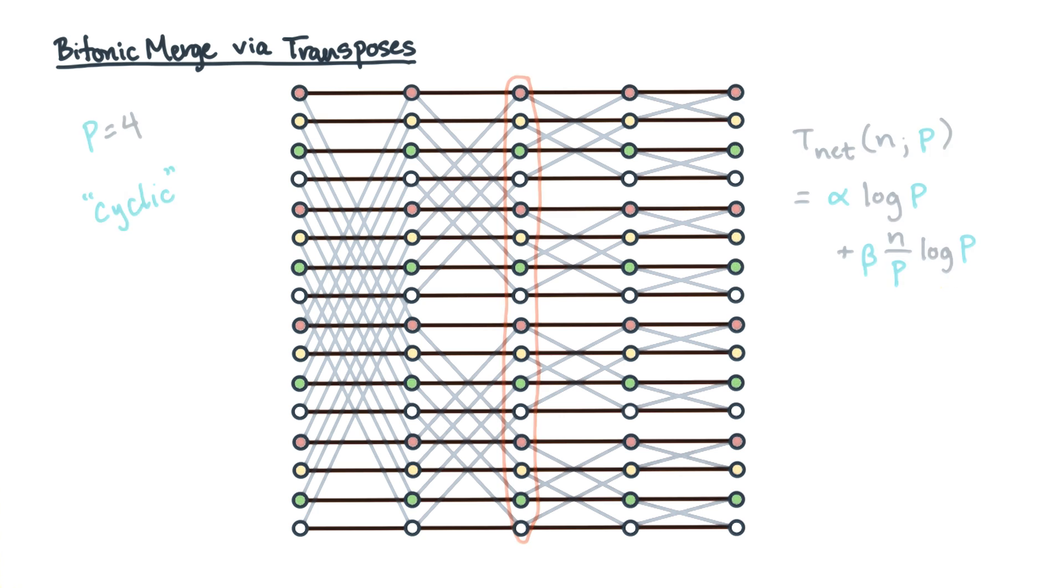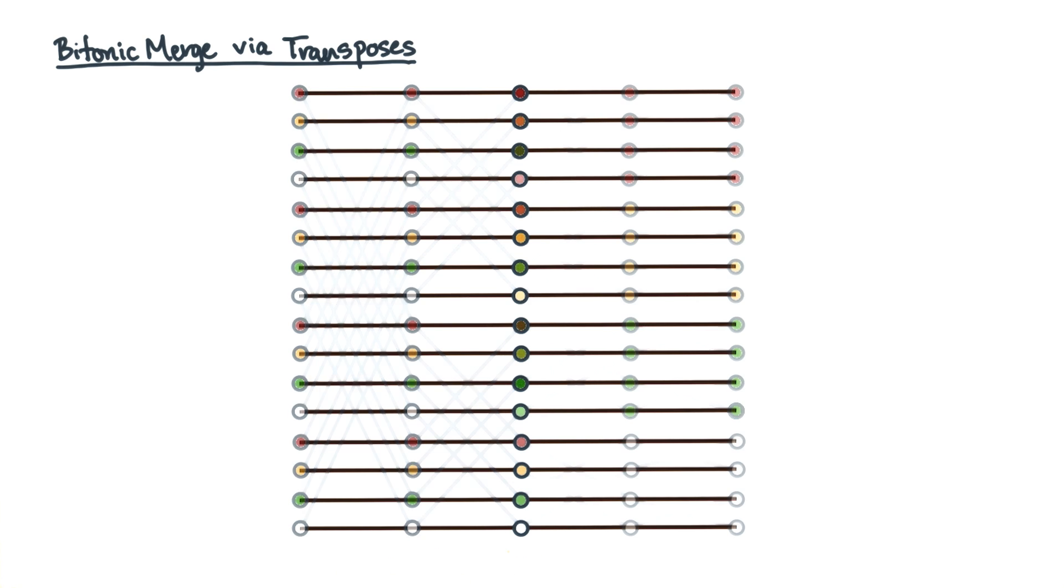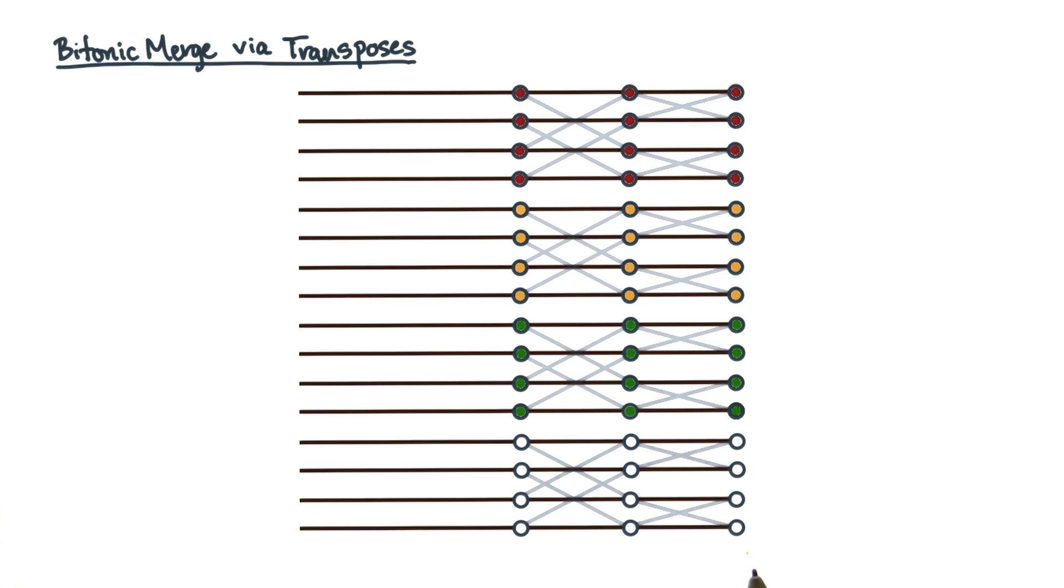In fact, there is. First, let's start cyclic. Starting cyclic means there's no communication initially. Then, let's switch to block. Switching to block means at the end there's no communication.